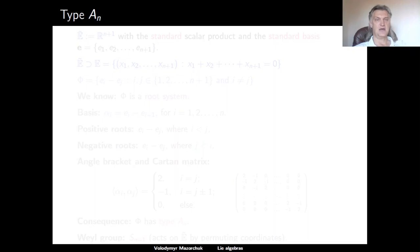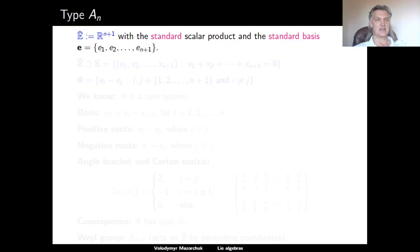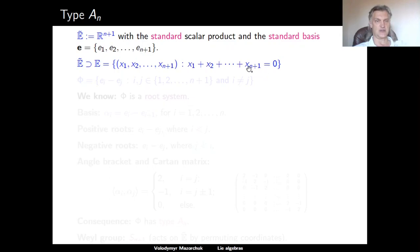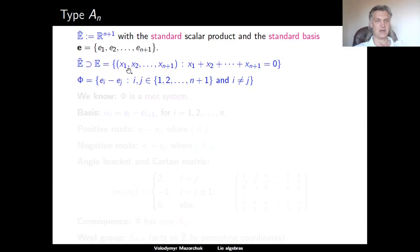We start with the realization of the series An, which we have already seen in previous lectures. We start with the standard Euclidean space R^(n+1) with standard basis E1, E2, ..., E_{n+1}. In this Euclidean space, we consider the subspace consisting of all vectors whose sum of coordinates is equal to zero. Our root system will be in this subspace, which has dimension n.